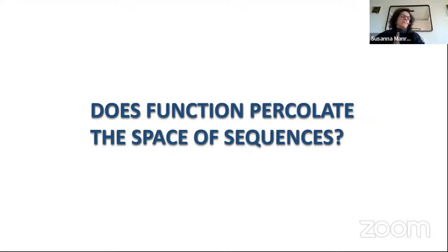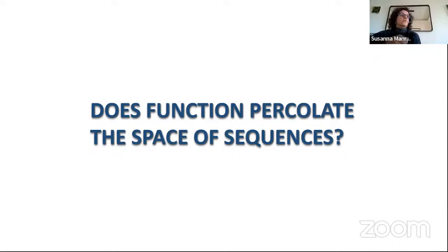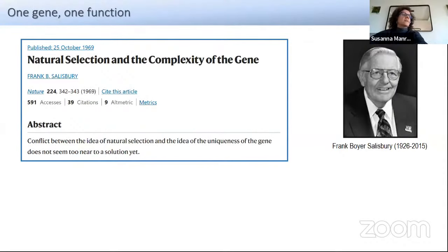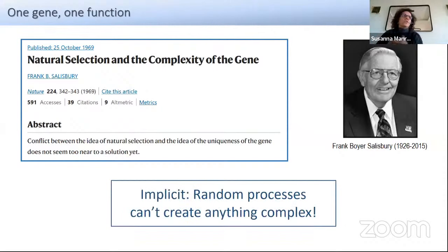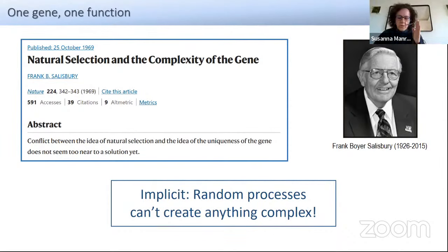One of our last questions was whether the function percolates the space of sequences. This is important because it means I can navigate the space of meaning, the space of functional meaning, and still have access to different phenotypes without losing the function I'm currently performing. We saw this contraposition of ideas: the assumption that there was one gene mapping into one function, and that every molecular function was restricted to a specific sequence.